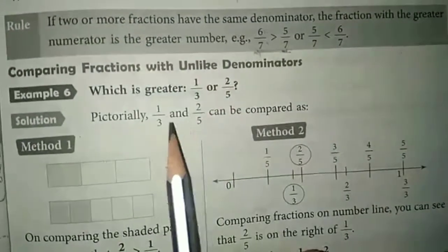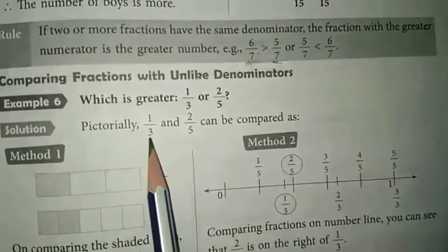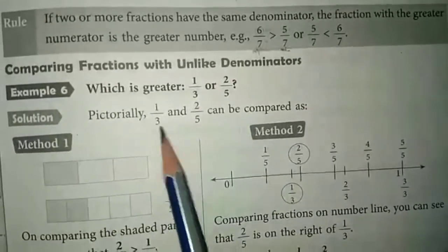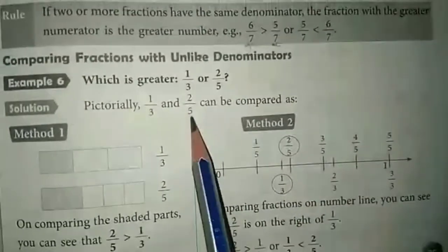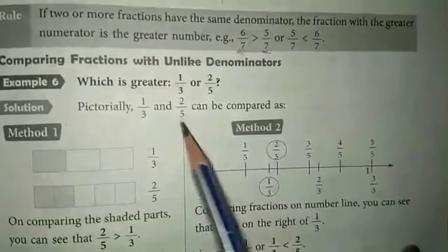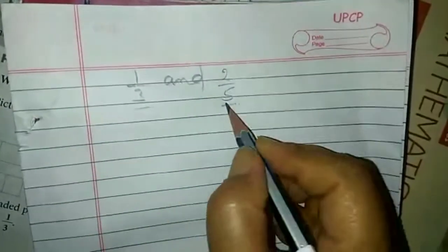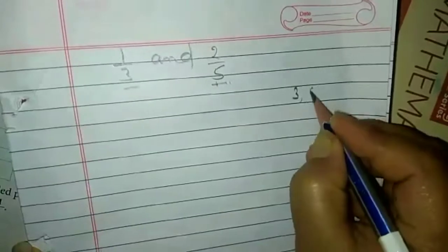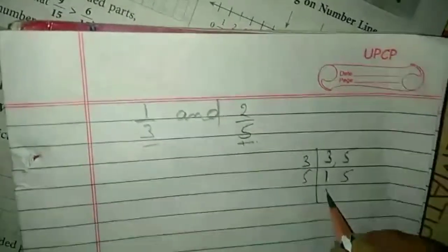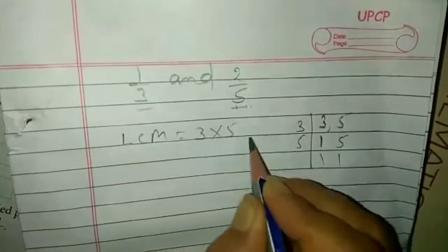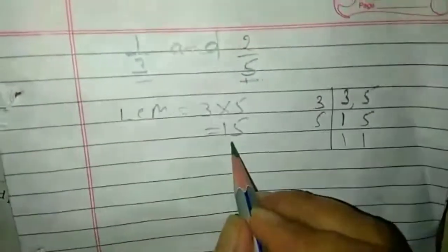If we have unlike fractions — yaani agar hamare paas aise fractions hain jinke denominators same nahi hain — so first we will take LCM. For example, we have two fractions: one upon three and two upon five. Inke denominators same nahi hain, toh sabse pehle hum inke liye LCM lenge. Three and five — LCM is equal to three multiplied by five, so LCM will be fifteen.